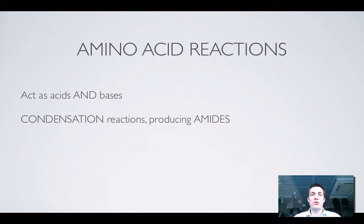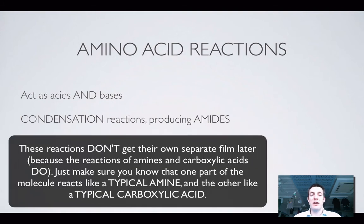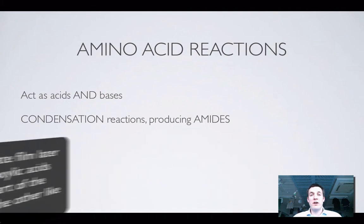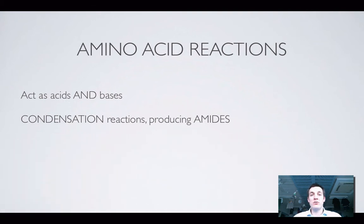Amino acids take part in several reactions. Because they have an amino group they act as bases, and because they have a carboxylic acid group they also act as acids — so parts of the molecule can act as both. Importantly, because they contain an amine and a carboxylic acid, an amino acid can react with itself in a condensation reaction to produce an amide. These reactions will be explored in more depth later on.